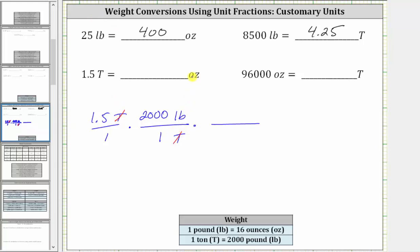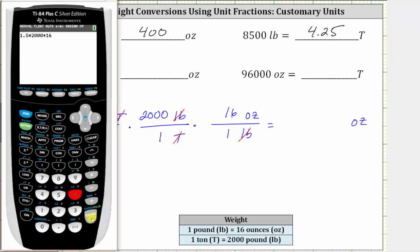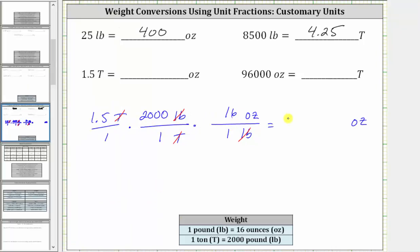Now we need to convert pounds to ounces using the conversion one pound equals 16 ounces. We want pounds to simplify out, and therefore pounds must be in the denominator and ounces in the numerator. One pound equals 16 ounces, so the second unit fraction is 16 ounces over one pound. Pounds simplify out, leaving us with ounces. Now we multiply, and the units are ounces. The denominator is one, so the product is 1.5 times 2,000 times 16, which is 48,000. So 1.5 tons equals 48,000 ounces.